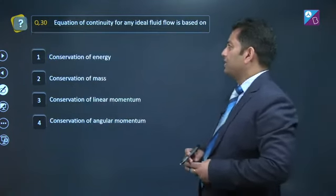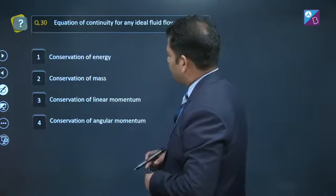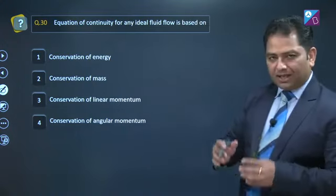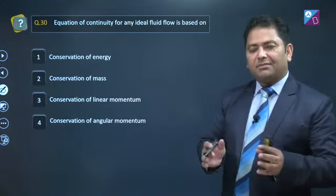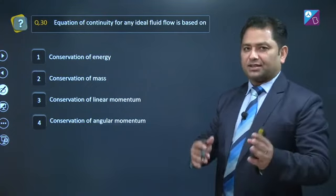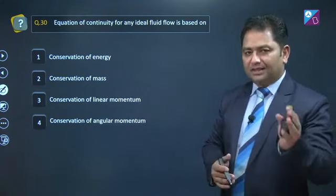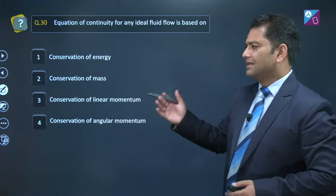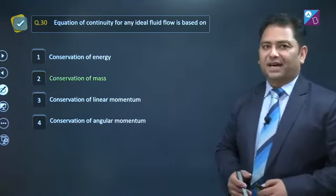Question number 30. Equation of continuity for any ideal fluid is based on conservation of mass. Kyunki hum yehi karte hai. At a given time, the incoming mass has to be equals to outgoing mass in the same unit of time. Jis ka matlab hai, consequence of conservation of mass.